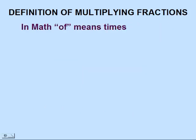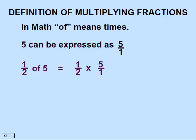In math, of means times. Five can be expressed as a fraction as five over one. Therefore, one half of five is equal to one half times five over one.